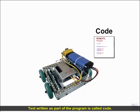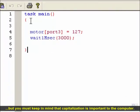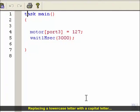Text written as part of the program is called code. You can type code just like normal text, but you must keep in mind that capitalization is important to the computer. Replacing a lowercase letter with a capital letter or a capital letter with a lowercase will cause the robot to become confused.